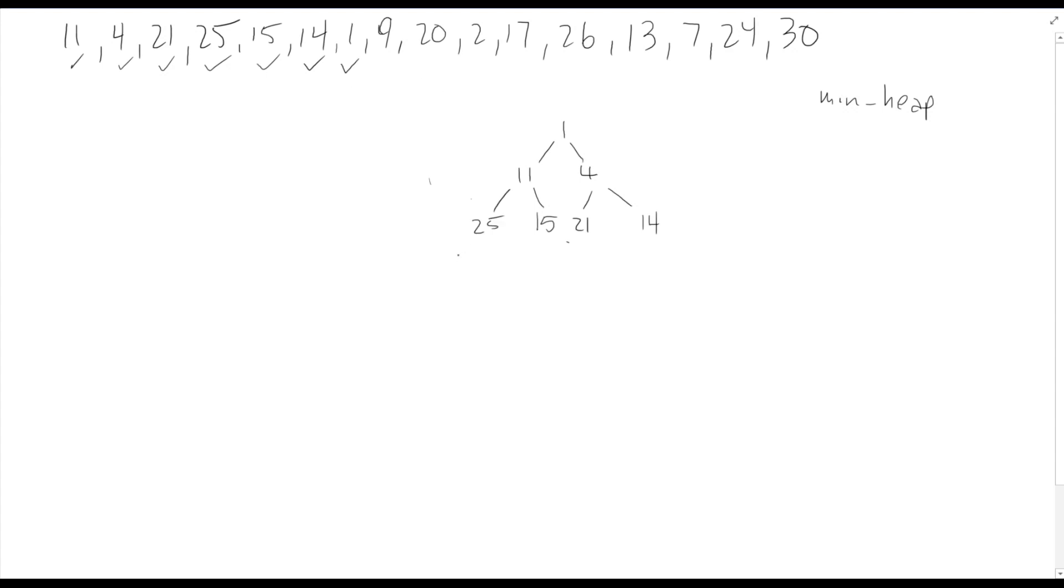This next add is going to be an interesting one because 1 will be the minimum element in our heap. So when we add it down here, of course we're violating our invariant. So we do need to do a swap operation here. So we swap the 1 with the 14, and now we need to swap the 1 with the 4 as well. The 1 has bubbled its way all the way to the top.